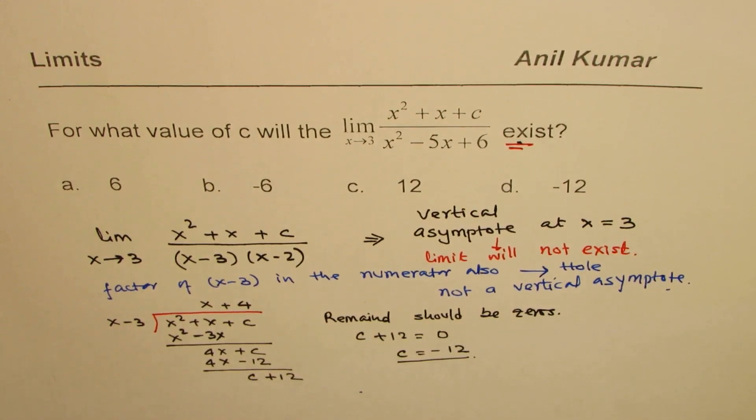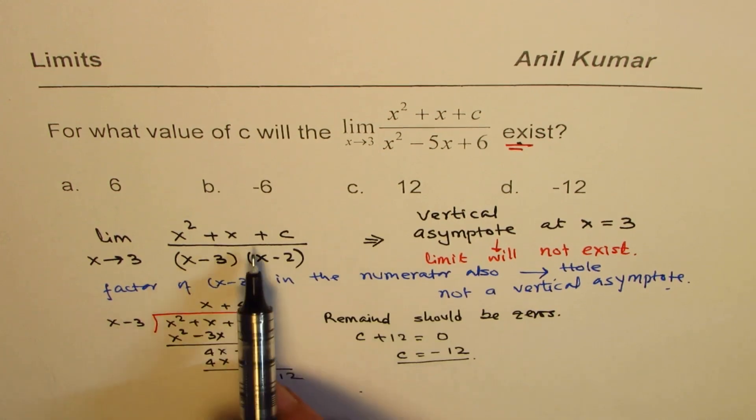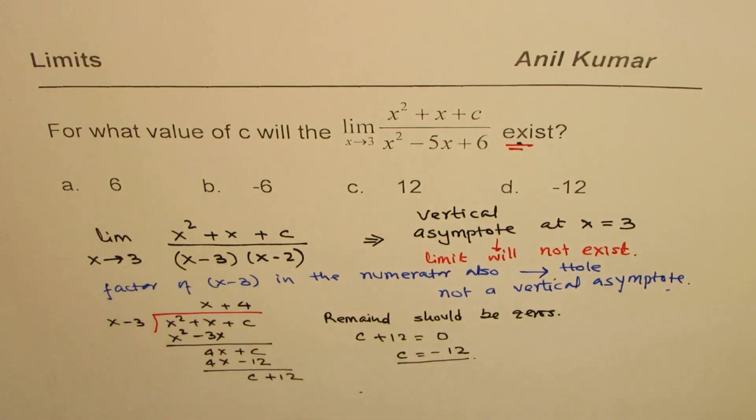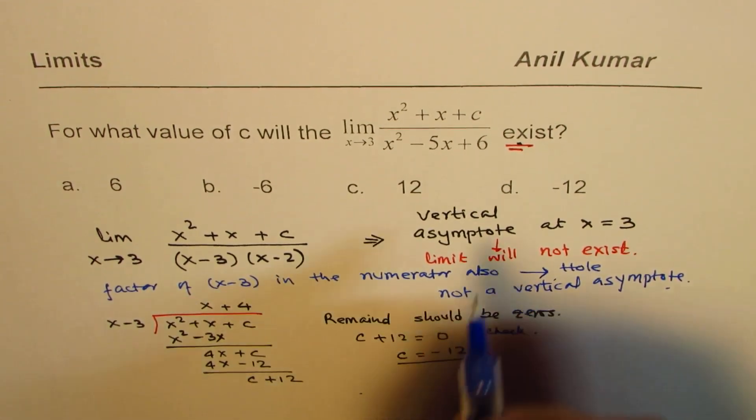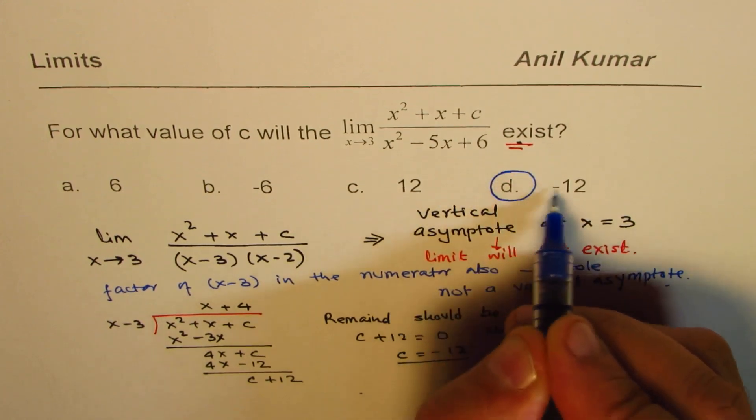So if c is minus 12, then we'll have a factor x minus 3 in the numerator also. You can check. So the answer we have already got, and that is d, c equals to minus 12.